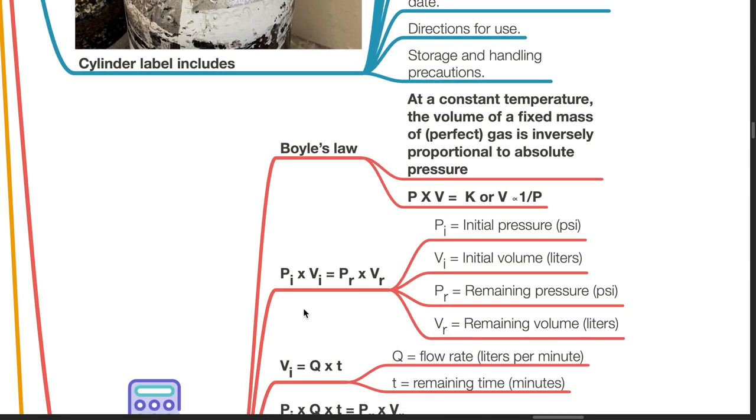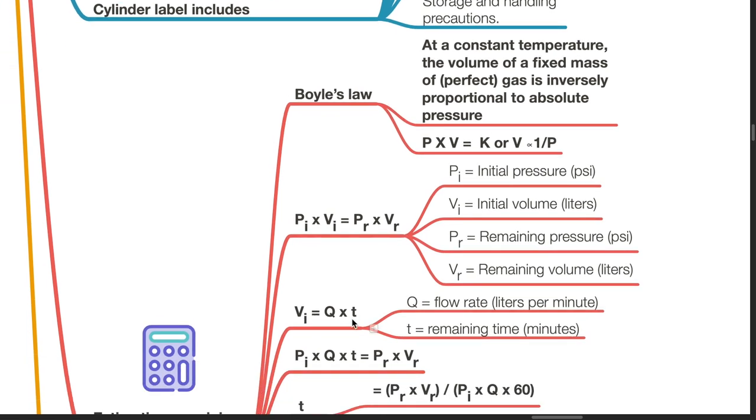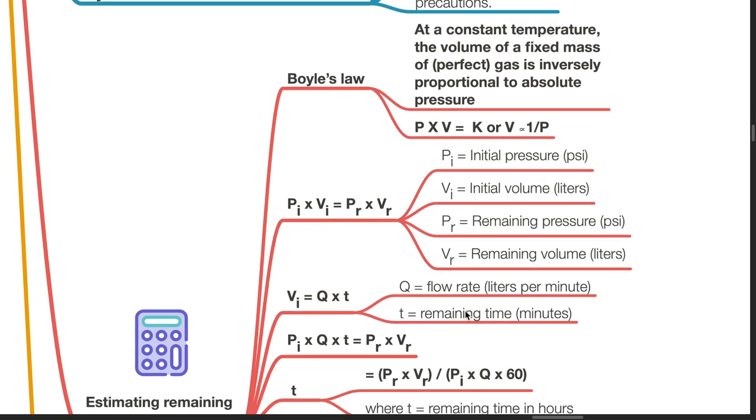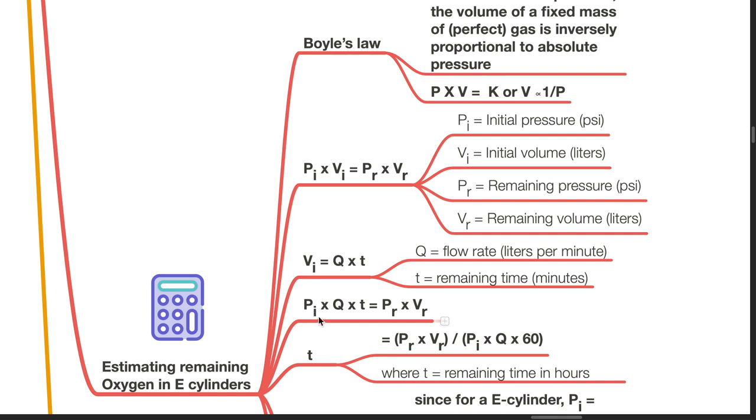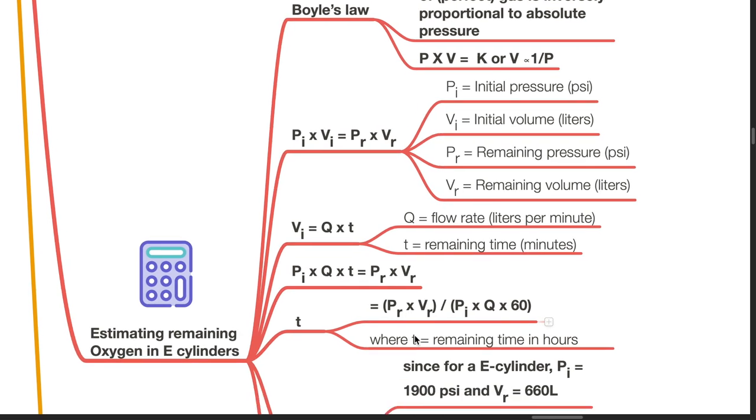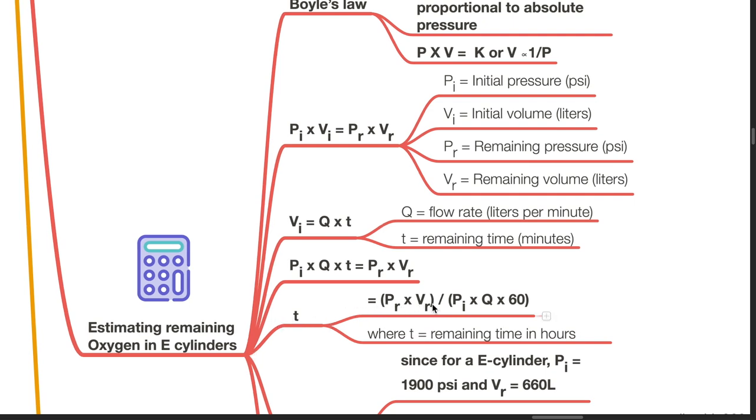PI times VI equals PR times VR, where PI equals the initial pressure, VI equals the initial volume in litres, PR equals the remaining pressure in PSI, and VR equals the remaining volume in litres. VI equals Q times T, where Q equals flow rate in litres per minute, and T equals remaining time in minutes. PI times Q times T equals PR times VR. T equals PR times VR divided by PI times Q times 60.